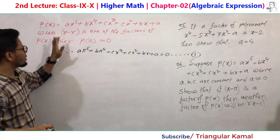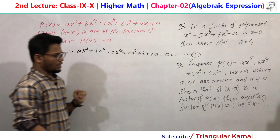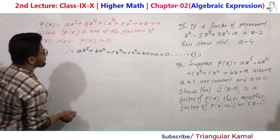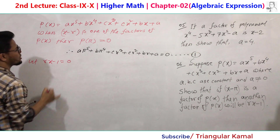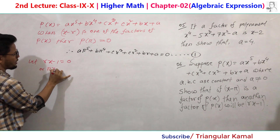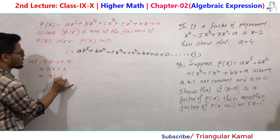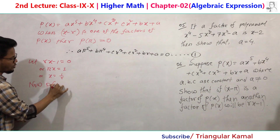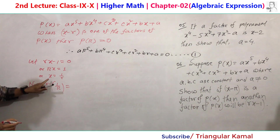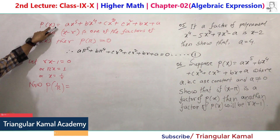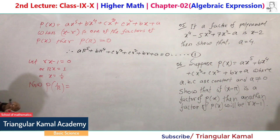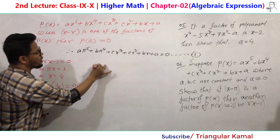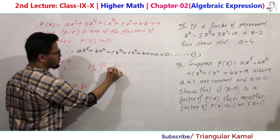For the second information: rx minus 1 equals zero gives rx equals 1, so x equals 1/r. Now find p(1/r) by substituting x with 1/r. So a times (1/r) to the power 5 equals a divided by r to the power 5, since 1 to the power 5 is 1. Similarly, b times (1/r) to the power 4 equals b divided by r to the power 4.